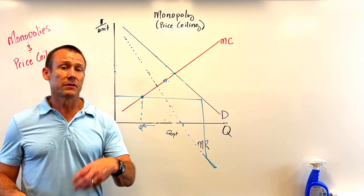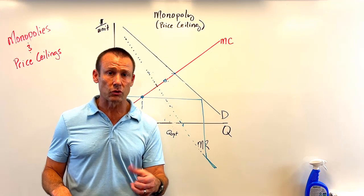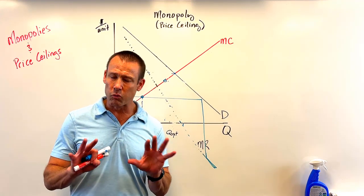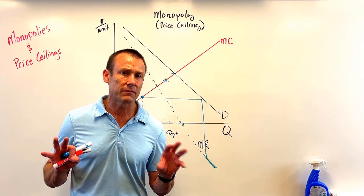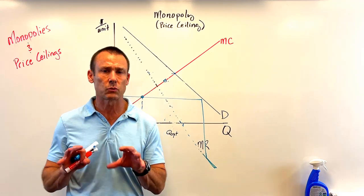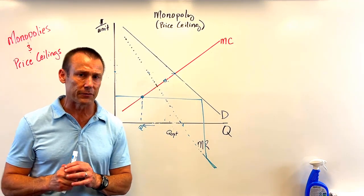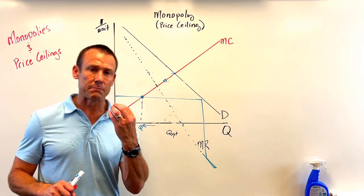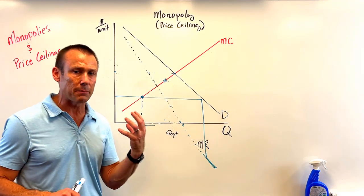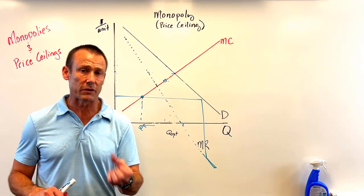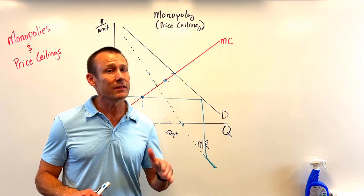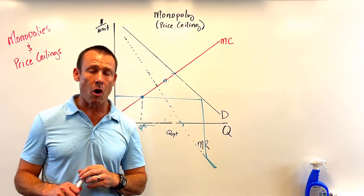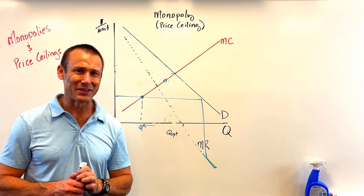These are basically short-run results. Yes, we can increase output in the short run, but the long run is fuzzier because of the incentive effects of this price ceiling. Hopefully you've mastered price ceilings and monopolies — it's really straightforward. The big thing is: the price ceiling generally becomes the MR curve. Hope to see you in the next video.